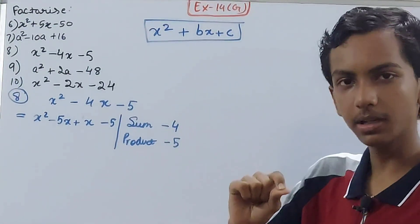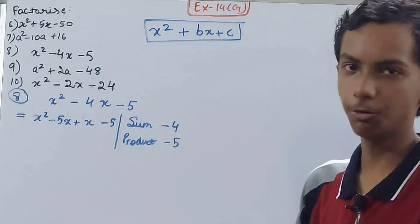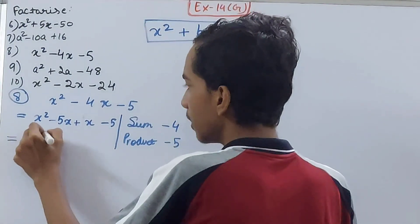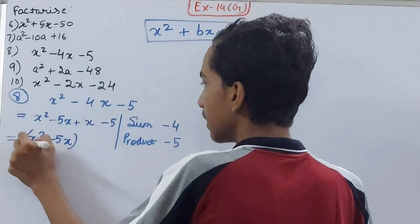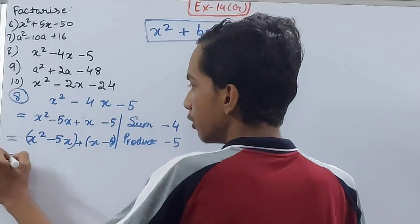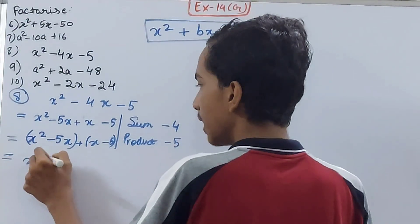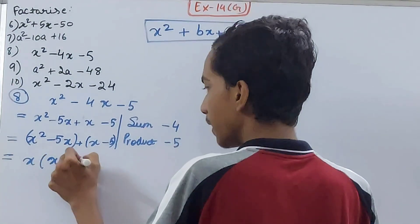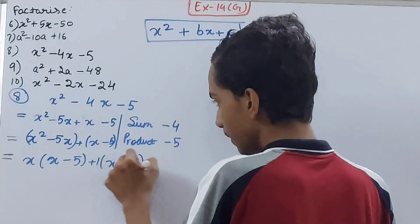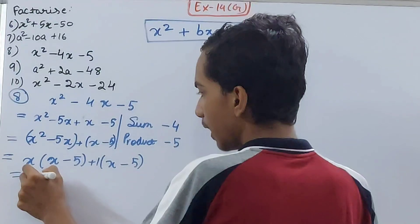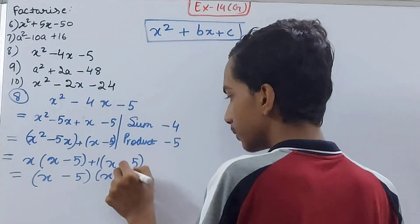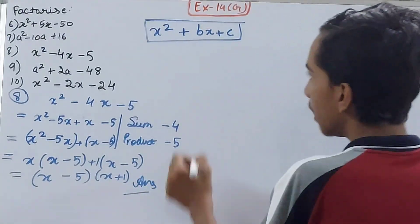So minus 5 plus 1 gives minus 4, and the product is minus 5. Now group: x squared minus 5x in one group, and x minus 5 in another group. Take x common to get x minus 5, and take 1 common from the second group to get x minus 5. Taking x minus 5 common gives the answer: x minus 5 into x plus 1.